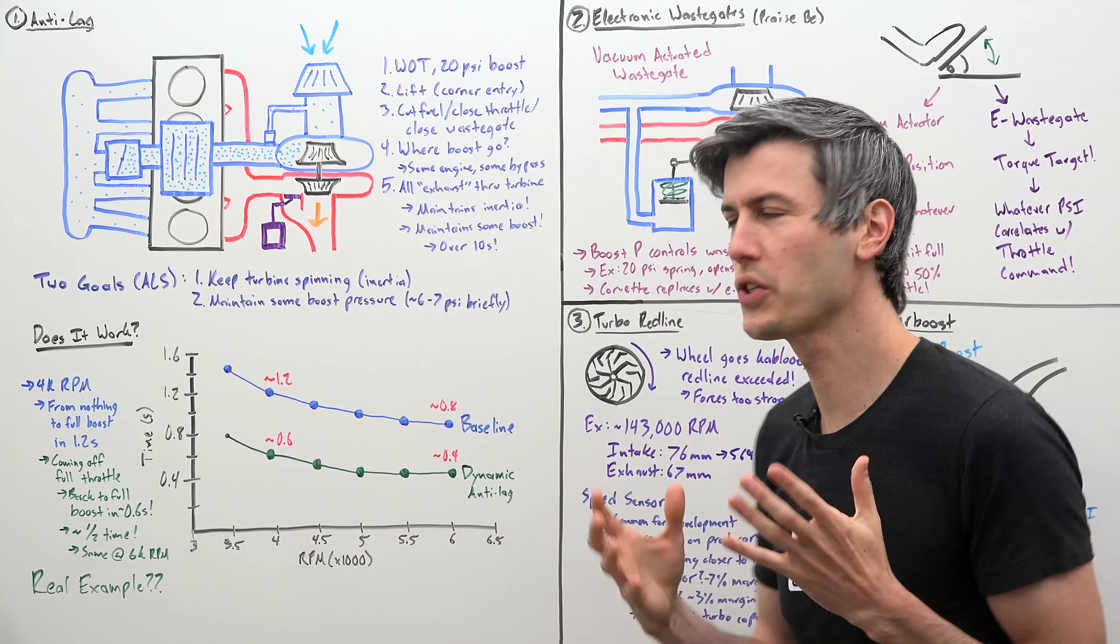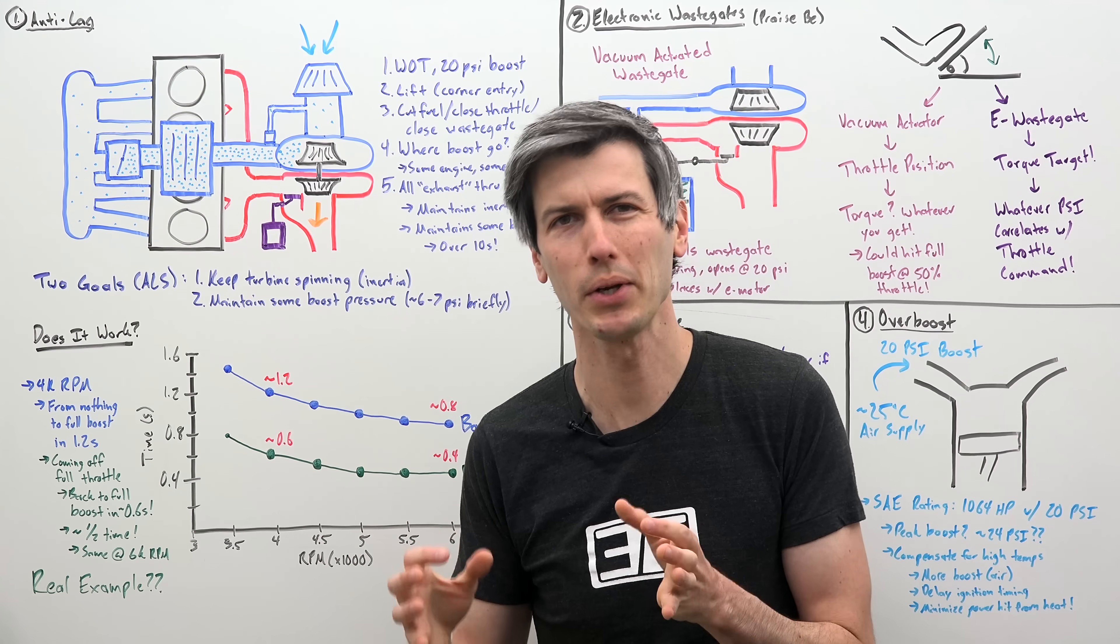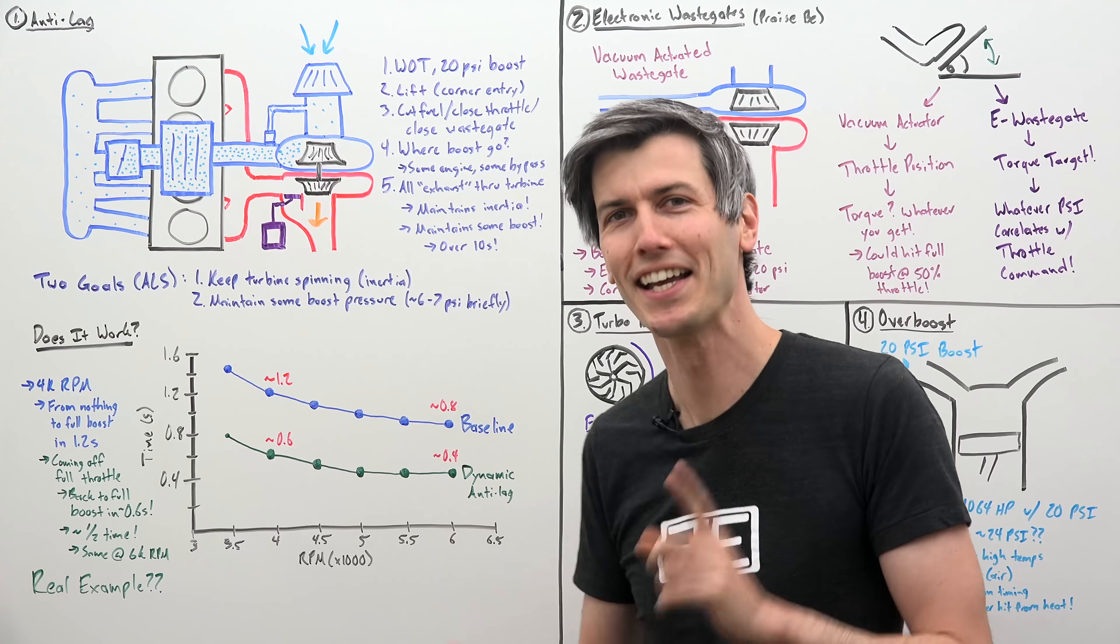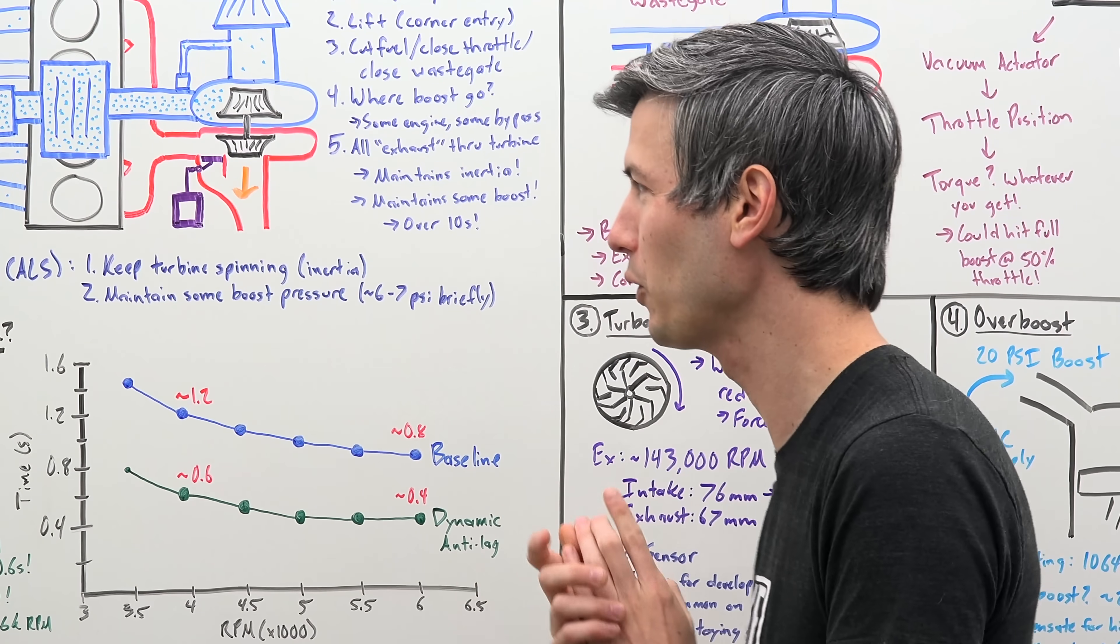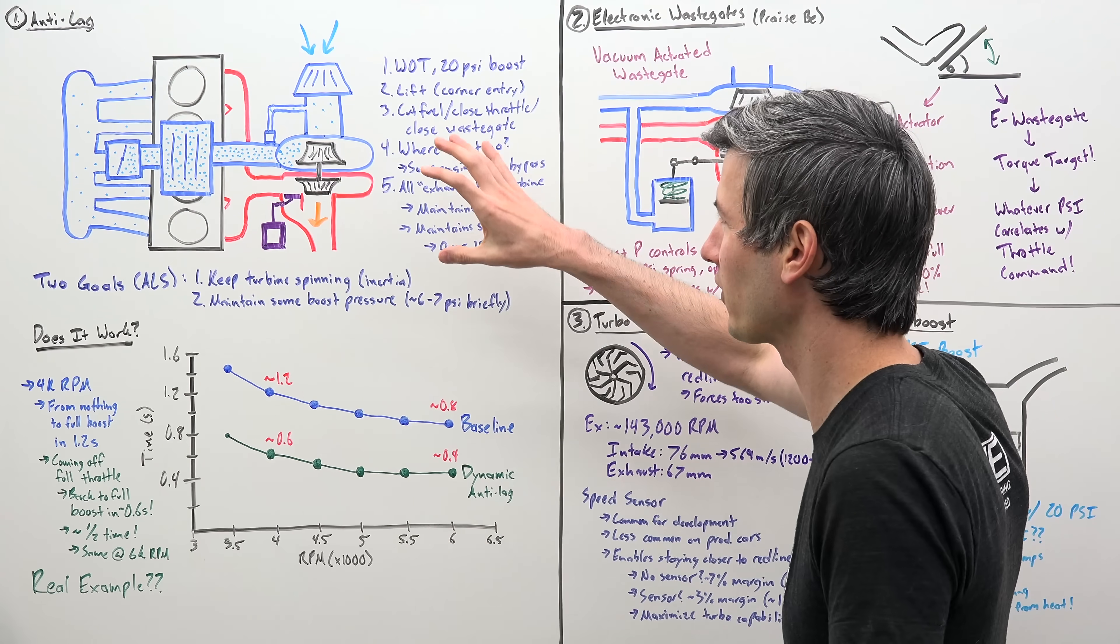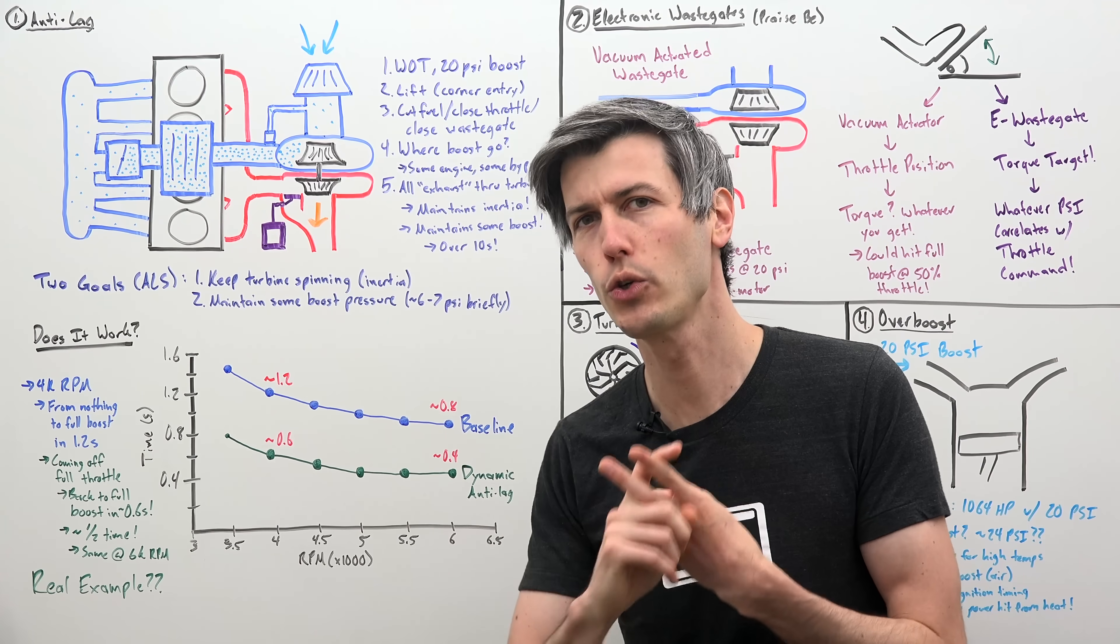As far as reducing turbo lag, Corvette engineers have put in place a very clever anti-lag strategy, and it doesn't even use any fuel. Keep in mind as we discuss this, the anti-lag has two goals in mind.